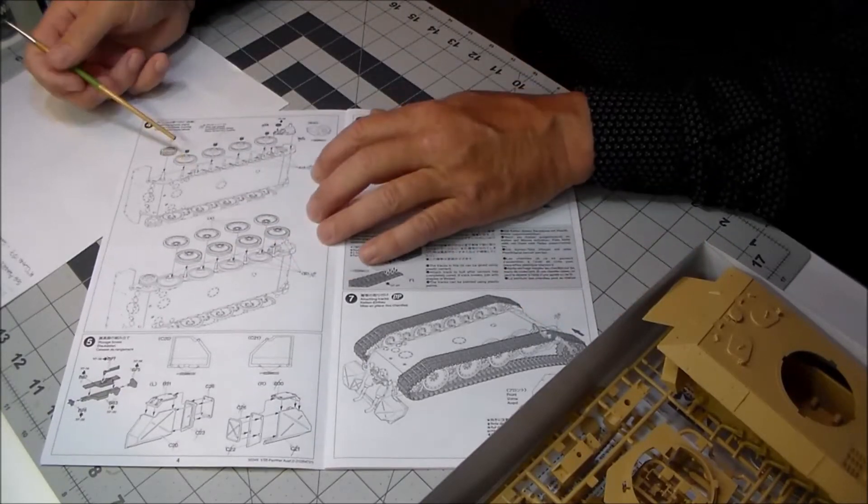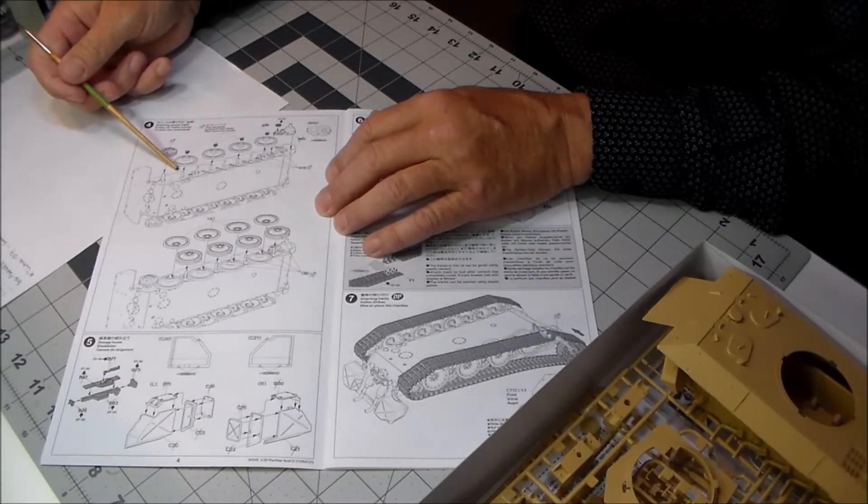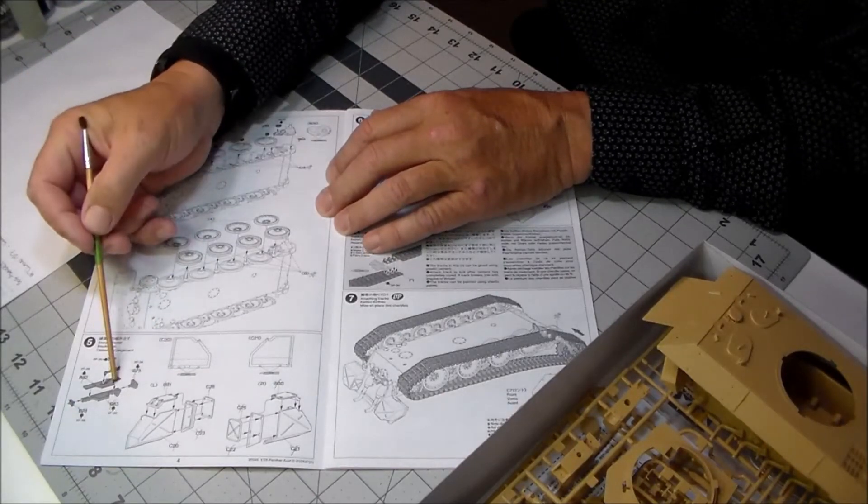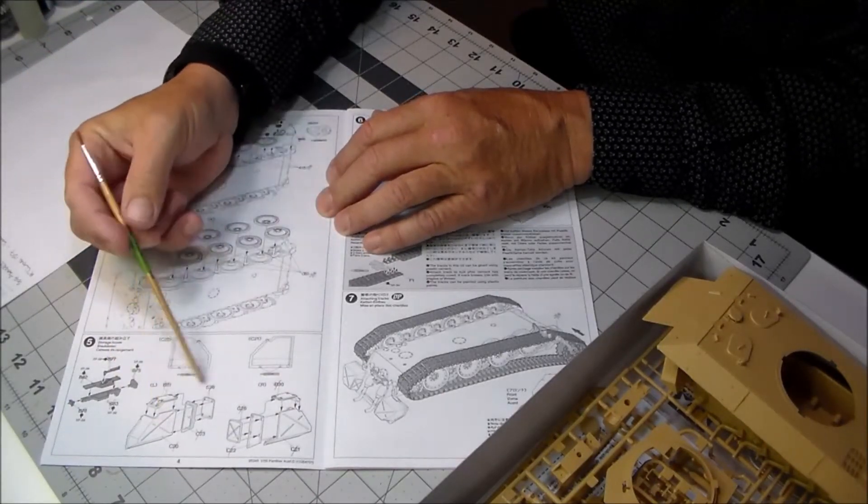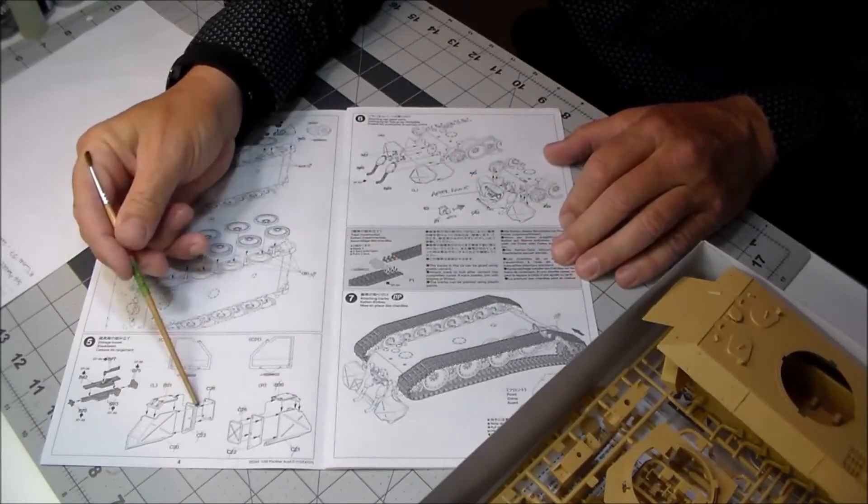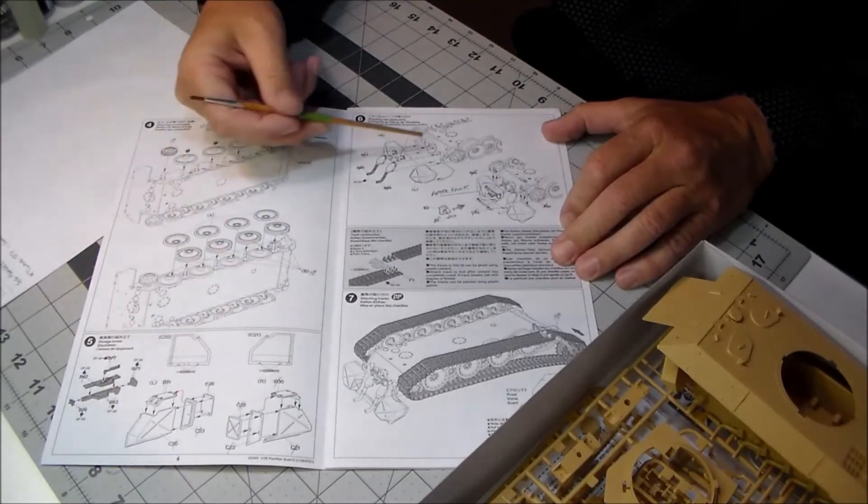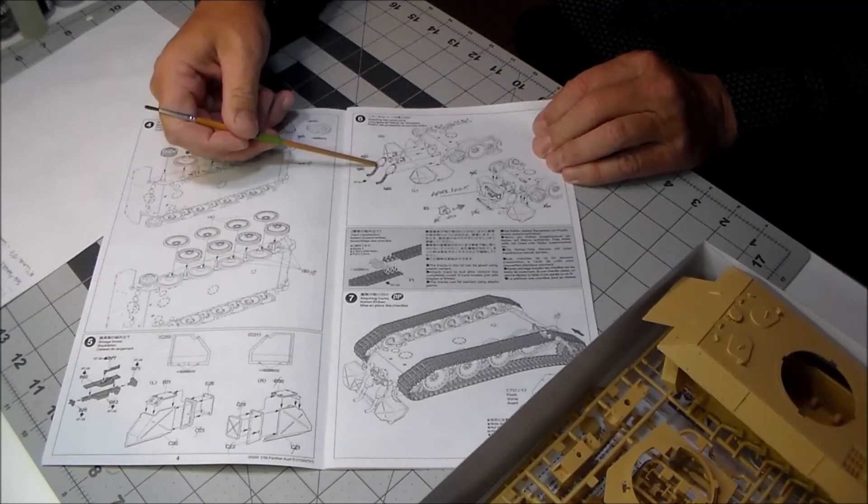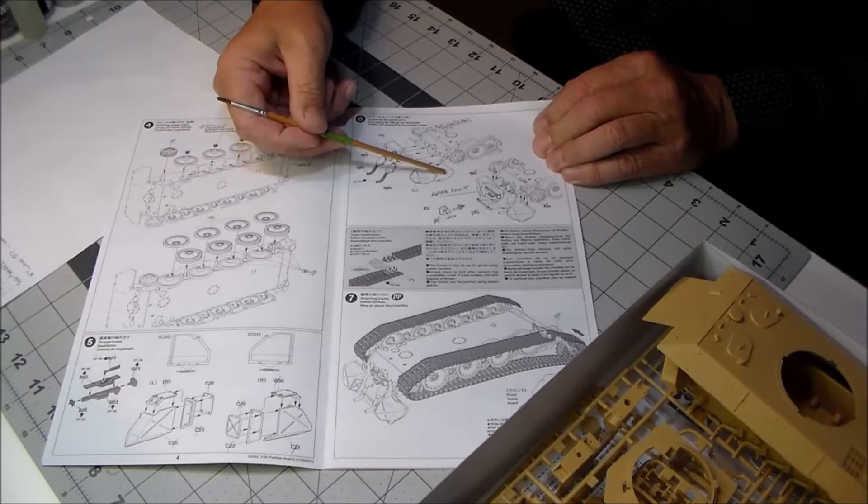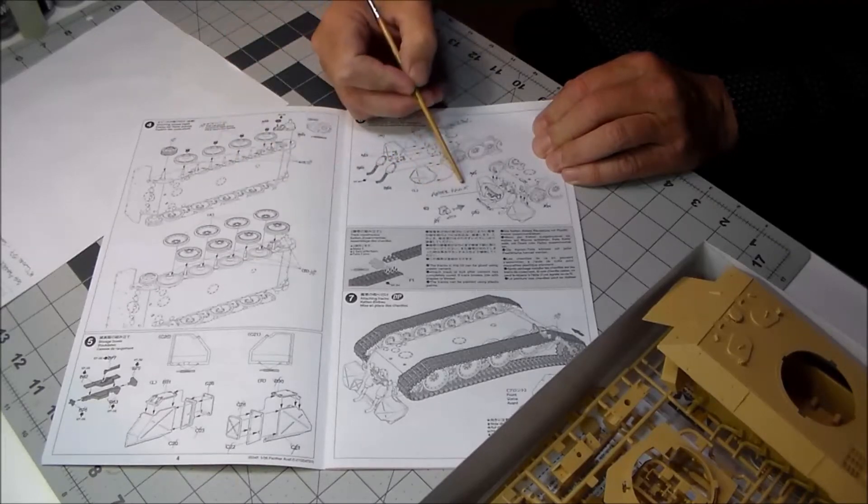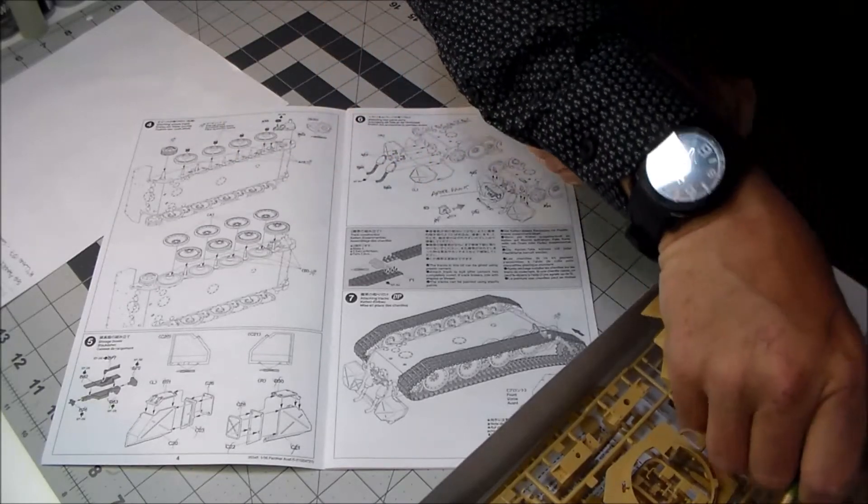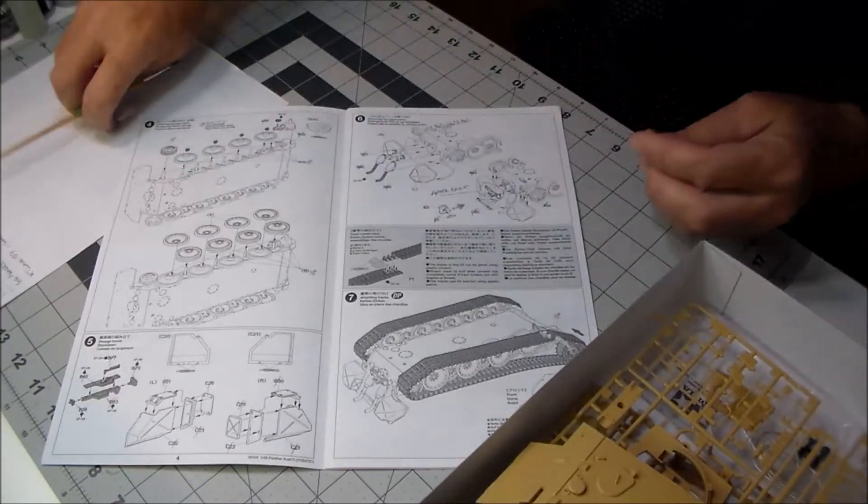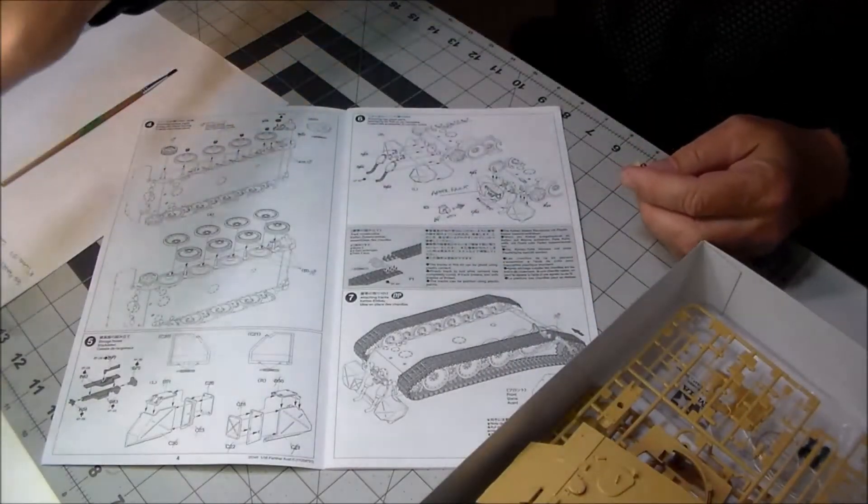Then I assembled the jack, assembled the tool boxes or storage boxes, whatever, got those attached to the back of the hull. The exhaust is attached - I attached everything. I made myself a notation here to attach the jack after painting.